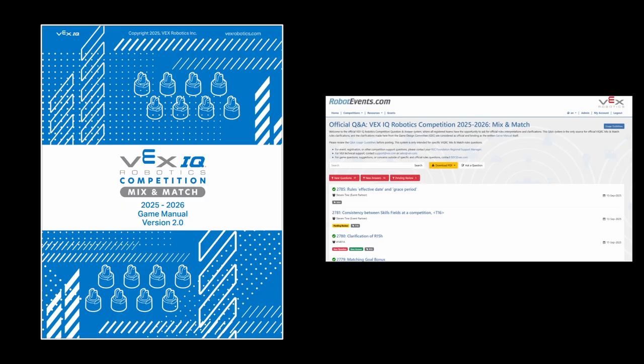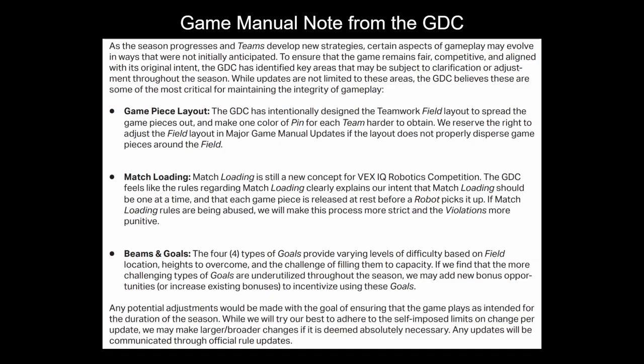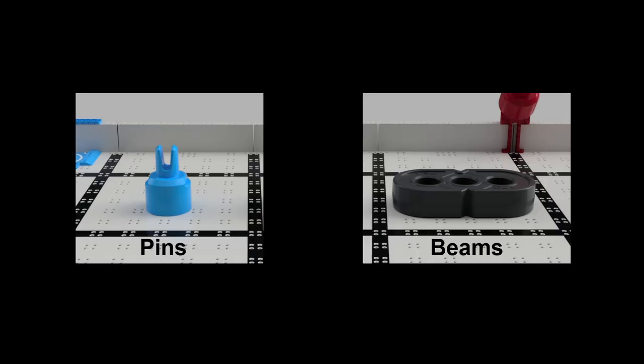One last note: at the time of the creation of this video, the latest game manual was version 2.0 from early September and I only have access to the questions in the Q&A from that same time period. So be sure to check the latest manual and Q&A. This is especially important because this is the first year that I can remember where the game design committee has some interesting statements about making adjustments throughout the season, including adjusting the field layout and most importantly, potentially changing the scoring to encourage teams to use underutilized goals. That's interesting. Okay, let's jump in.